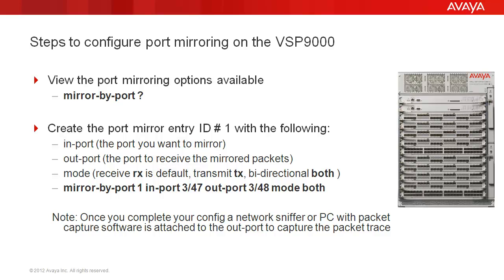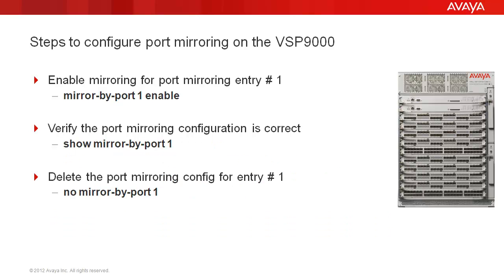Once you complete your configuration, a network sniffer or PC with packet capture software is attached to the out port to capture the packet trace. We will enable mirroring for our port mirroring entry ID number 1. We will verify our port mirroring configuration is correct using the show command. And finally, we will clean up by deleting our port mirroring entry ID number 1 and verify the entry has been deleted on the system.